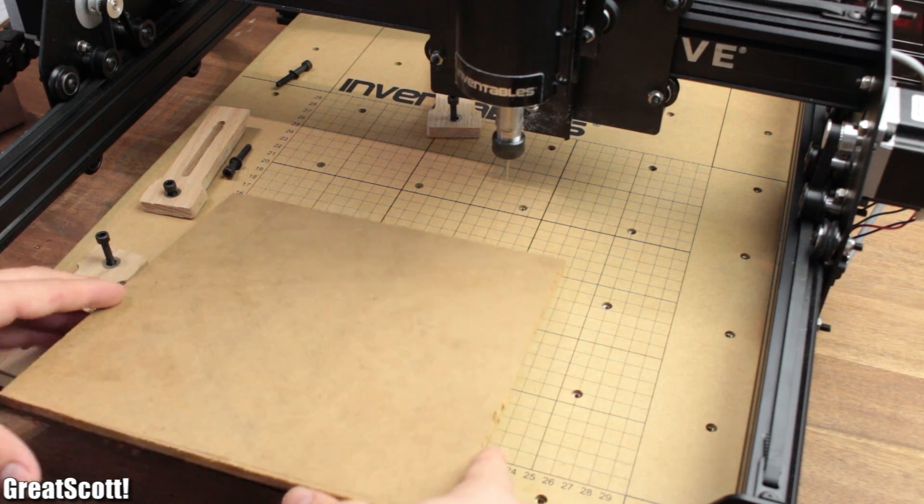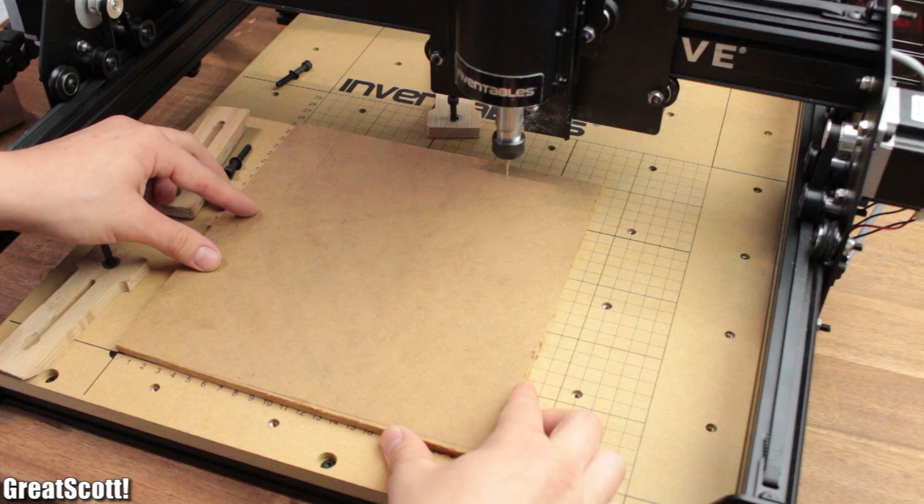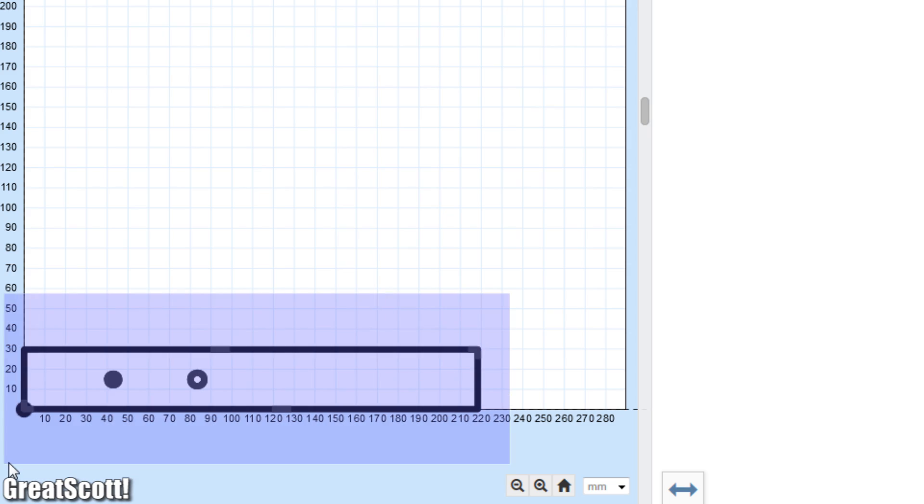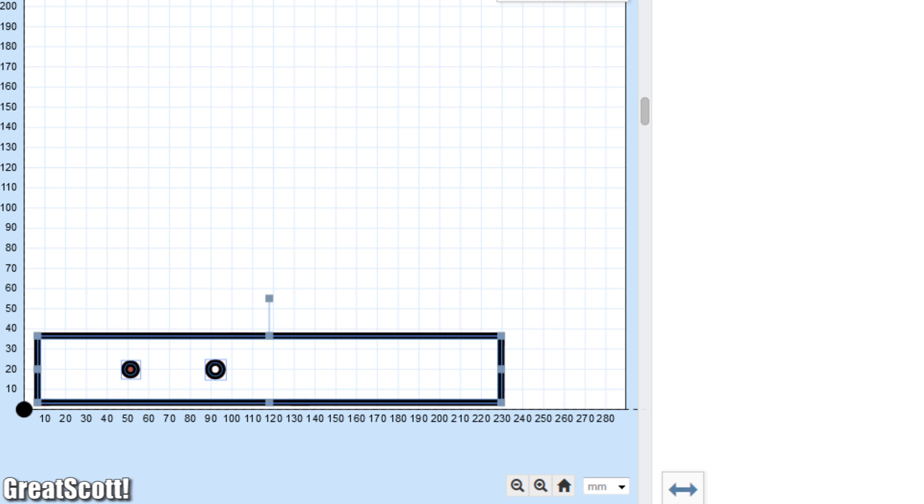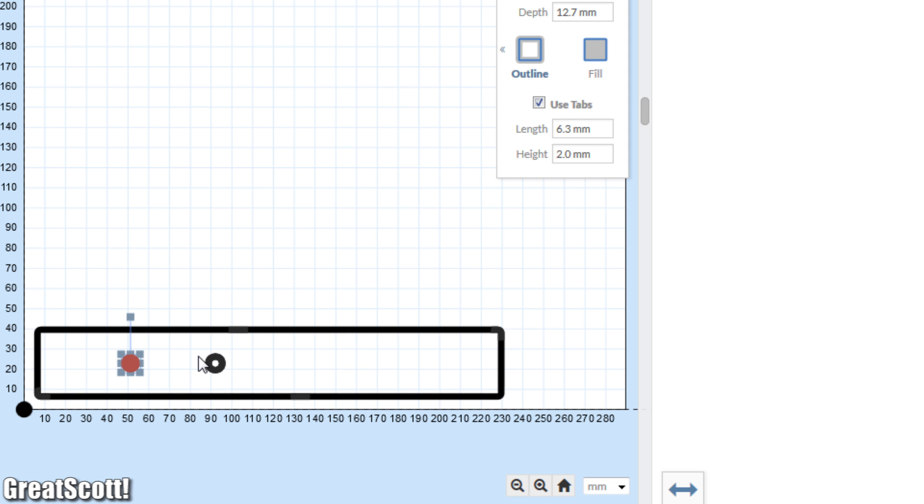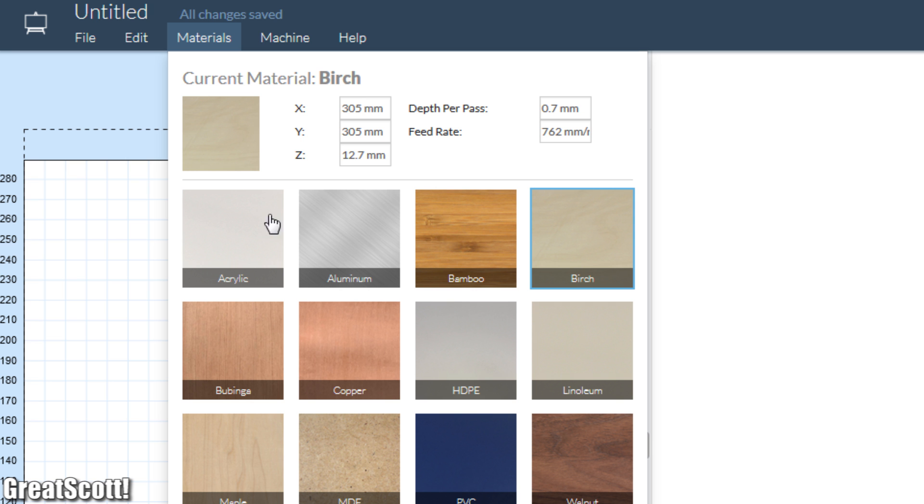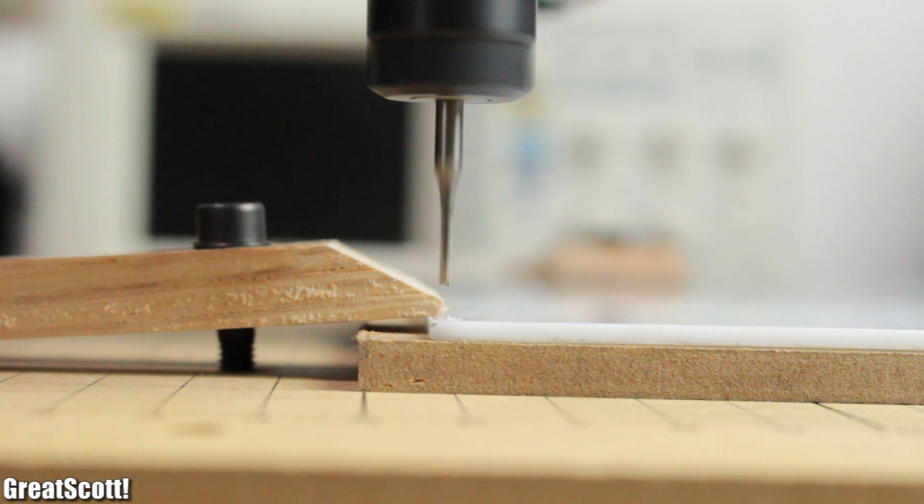But since I wanted to use my X-carve for quite a while, I secured my acrylic pieces into place and loaded my SVG files from Inkscape into the easel software. After I did some fine adjustments and changed the material type, I was ready for my first carve, which turned out terrible.